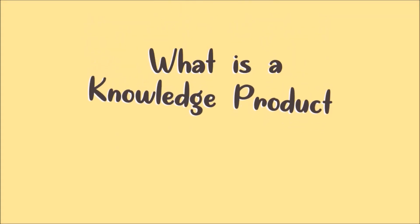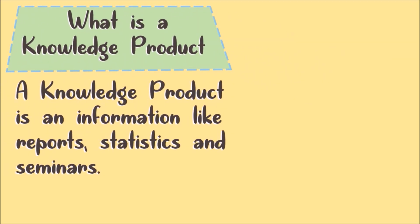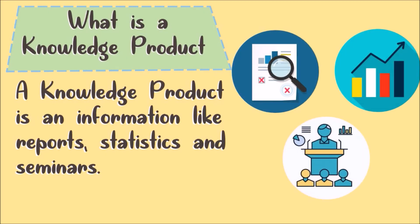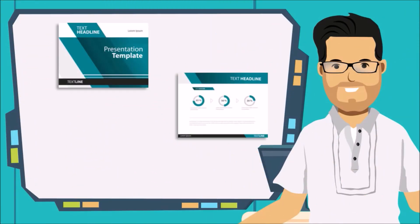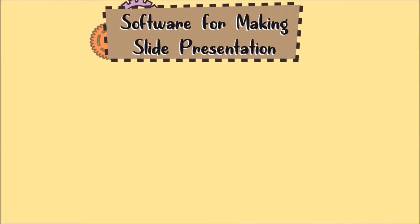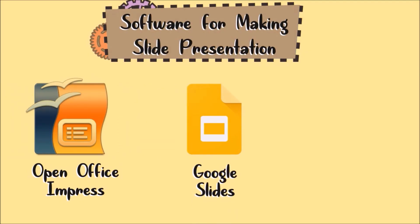It would be in a form of a knowledge product. What is a knowledge product? A knowledge product is information like reports, statistics, and seminars. These knowledge products can be easily presented to your audience in slides. Here are some examples of software where we can make a slide presentation.